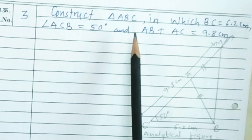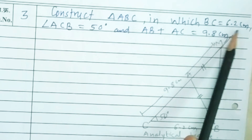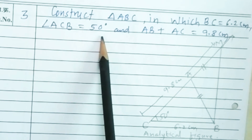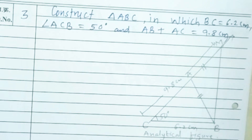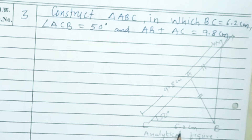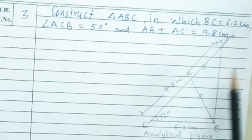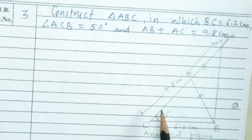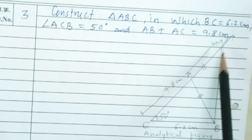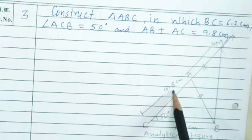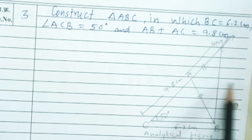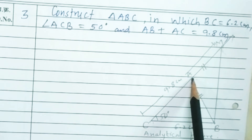Construct triangle ABC in which BC is equal to 6.2 cm, angle ACB is equal to 50 degrees, and AB plus AC is equal to 9.8 cm. The analytical figure: in triangle ABC, first draw BC of 6.2 cm, then make angle ACB equal to 50 degrees at point C. Take distance equal to 9.8 cm in the compass and draw an arc to plot point M on the ray at a distance of 9.8 cm. Join BM, draw the perpendicular bisector of BM — wherever the perpendicular bisector intersects CM is our point A — then join AB to get triangle ABC.